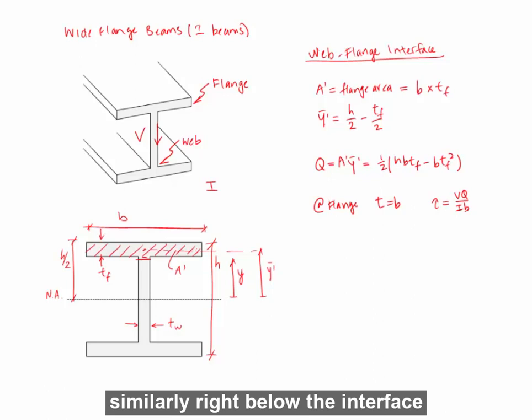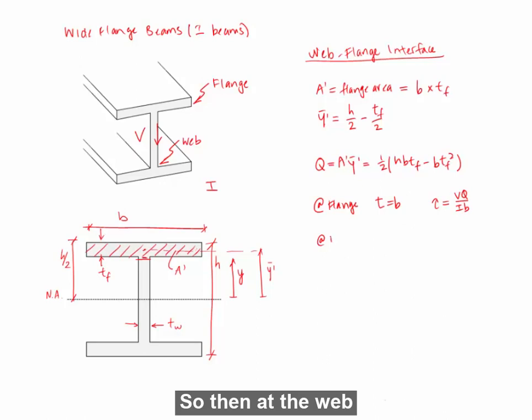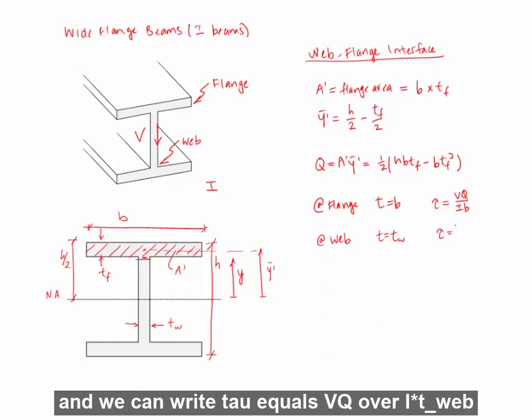Similarly, right below the interface, we are considering the stress in the web. So then at the web, T is our thickness of the web. And we can write tau equals VQ over I T web.